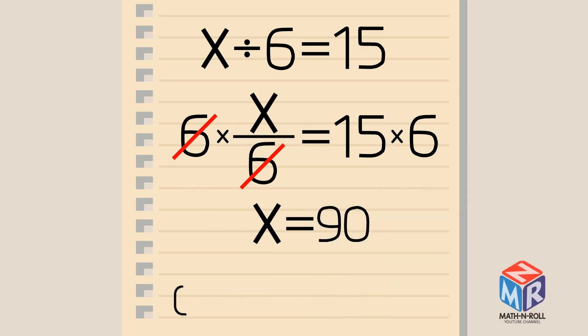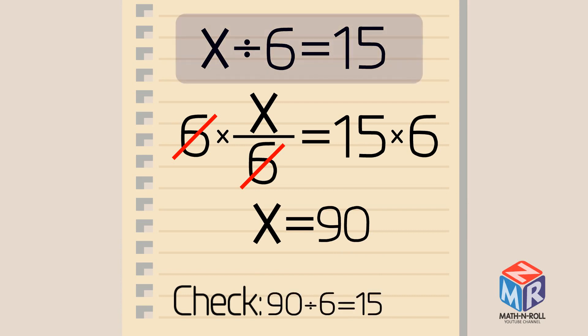Let's check our work by plugging in 90 for x. 90 divided by 6 equals 15. Our answer is correct.